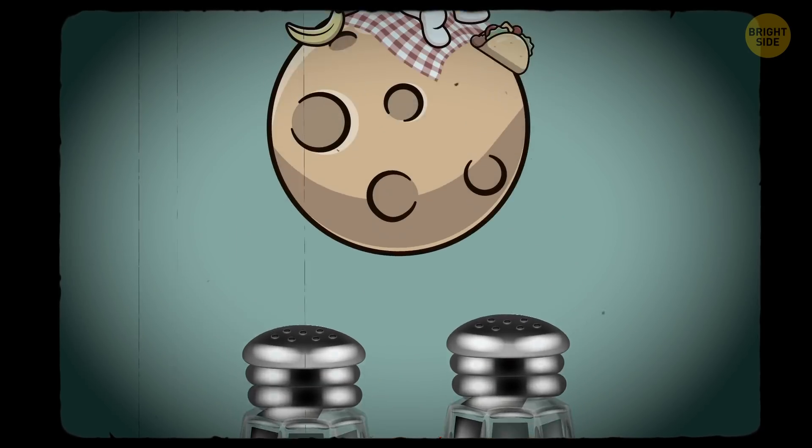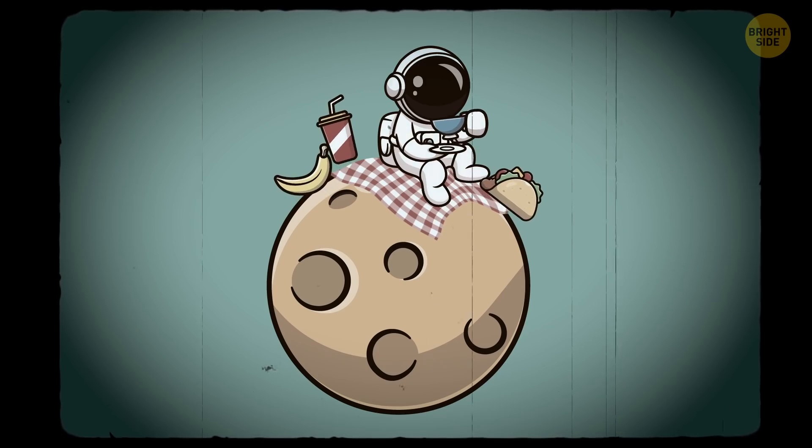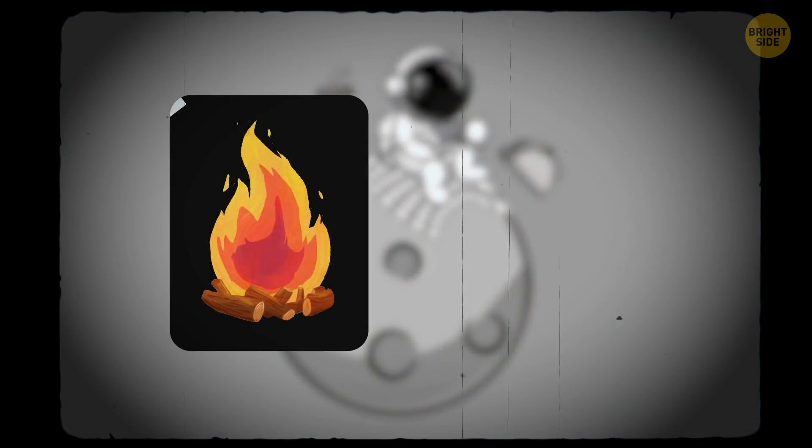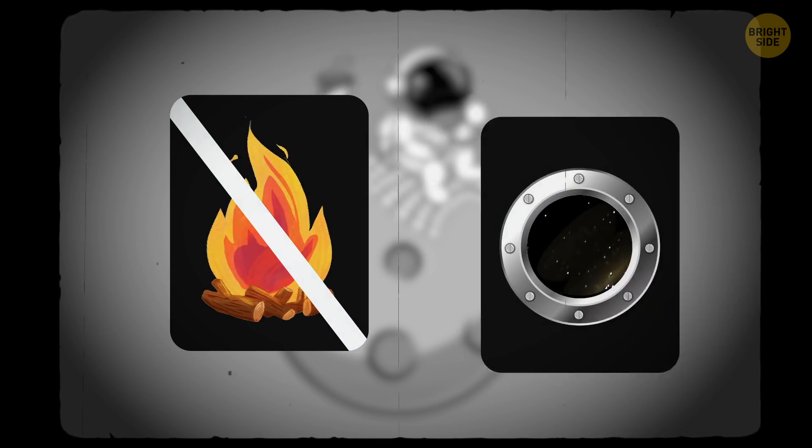For the rest, astronauts' meals look very much like regular picnics with friends. Somewhere in a peaceful meadow, but no campfire, guys. There's not enough oxygen for it, and you can't open the windows.